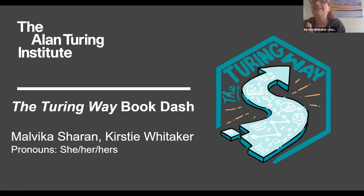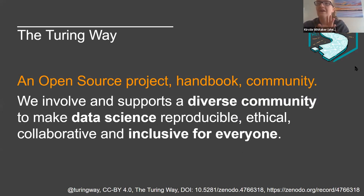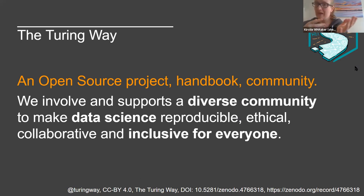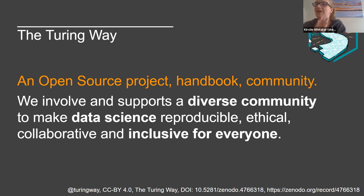These slides were created by Malvika and I'm delighted to be presenting them. Both of our pronouns are she/her/hers, and we're really, really excited to have you here at the Turing Way Book Dash. The Turing Way is an open source project — it's a handbook and a community — and we involve and support a diverse community to make data science reproducible, ethical, collaborative, and inclusive for everyone. Data science is defined extremely broadly: anything that uses data and any sort of scientific method, but it's not even just science — it also includes digital humanities, the arts, and social sciences. So if you don't feel like calling yourself a data scientist, don't worry — it's very likely that the Turing Way is inclusive of you and the way that you work.